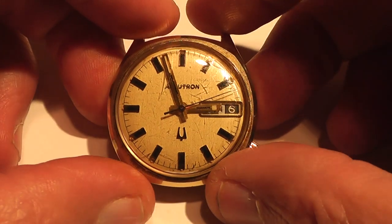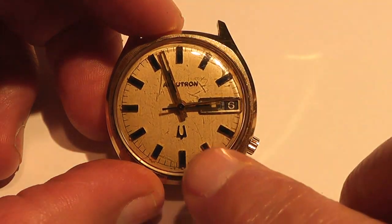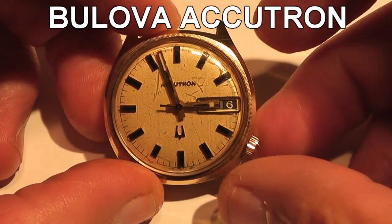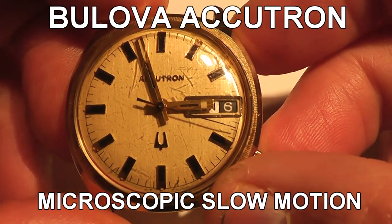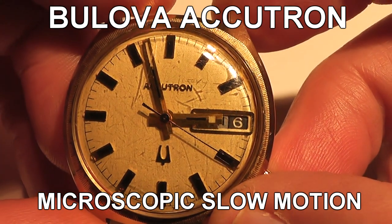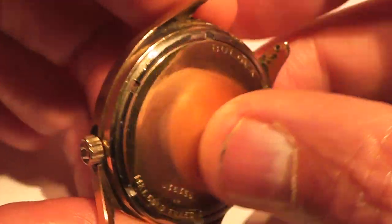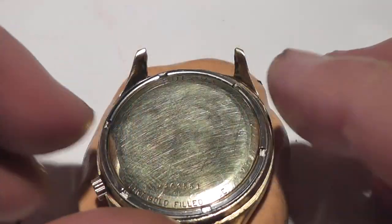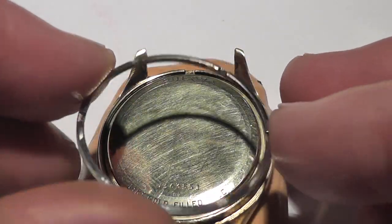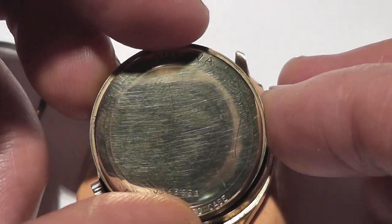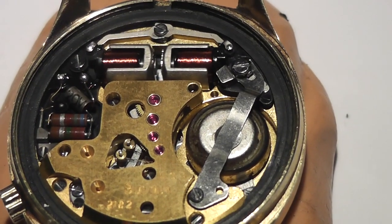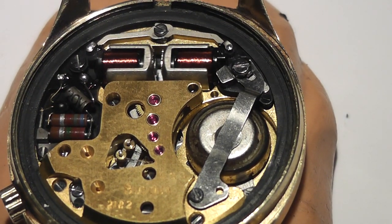While this may just look like an old watch to you, this is actually one of the greatest technological achievements made in the 21st century. Now the Accutron was made between 1960 and 1977. It is the first watch to use a transistor and the first watch to use a tuning fork to regulate the time. For quite a few years this was the most accurate watch on the market.